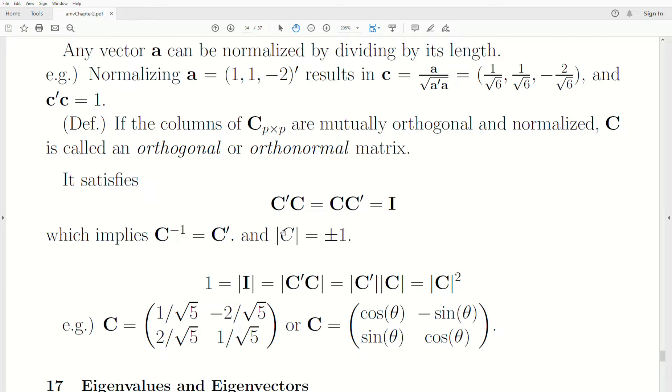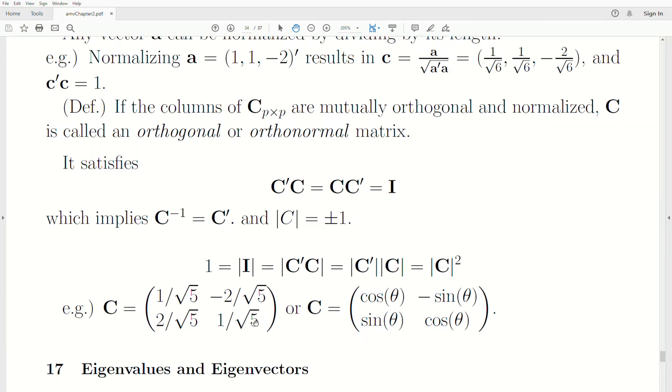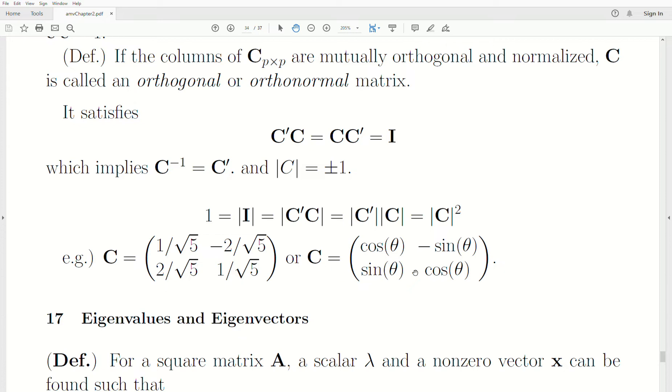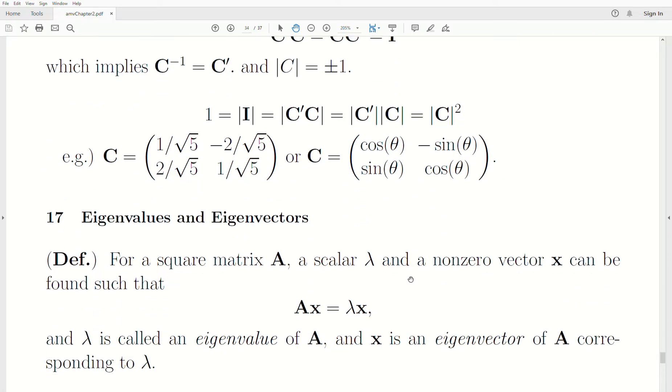It also implies that the determinant is either one or minus one, and that becomes important when we're doing linear transformations later. To see that it's one, the determinant of identity matrix is one, but C transpose C is the identity matrix. The determinant of a product is the product of the determinants, and the determinant of C transpose is the same as just C, so that's really C squared. Anything squared equals one means it has to be one or minus one. Here's some examples of orthogonal or orthonormal matrices that may prop up. This one here we'll use in principle components analysis.